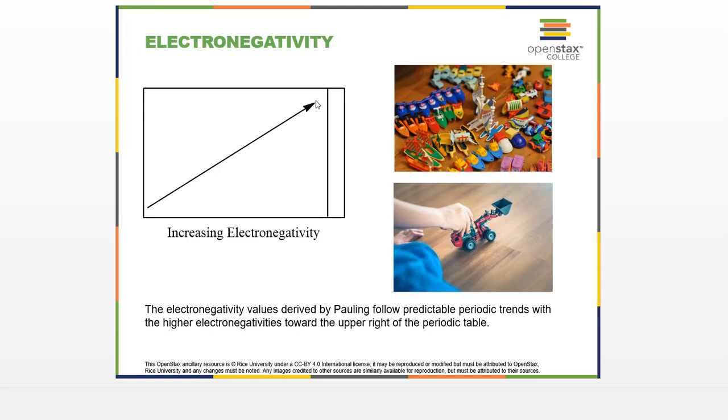In covalent compounds there's a sharing of electrons, but that doesn't necessarily mean that the sharing is equal, so the electrons will spend the same amount of time around one atom as another. When it's two hydrogen atoms, the sharing is equal because the hydrogen atoms are the same and they have the same electronegativity.